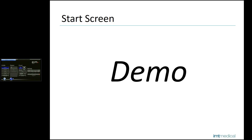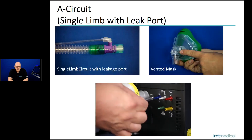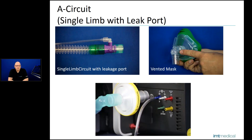Below the ATC there is the circuit type. To be more detailed on the circuit types, let's go back to the presentation. Bellavista is able to be used with several types of circuits — in fact there are already six, maybe seven. The first one is the A circuit, which is available only for non-invasive ventilation. You have to use single-limb circuits with a leakage port, because when you use the A circuit you don't have an exhalation valve.